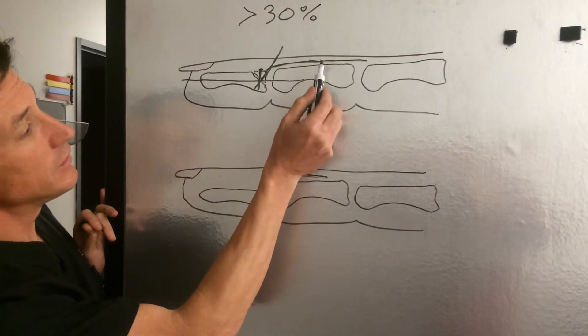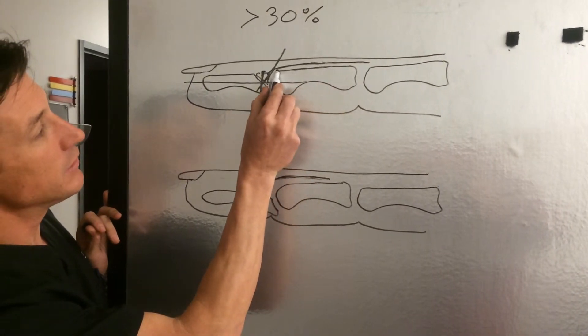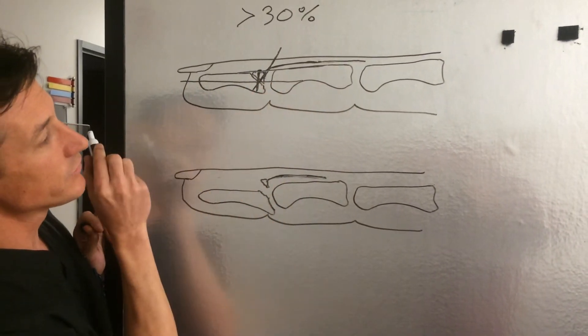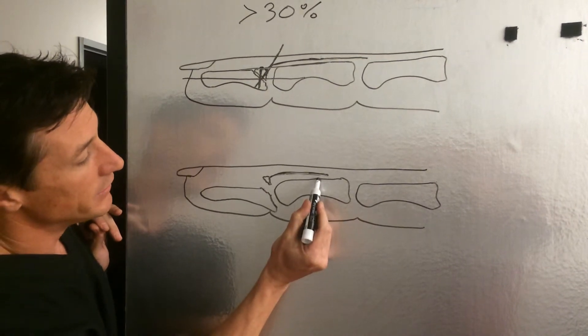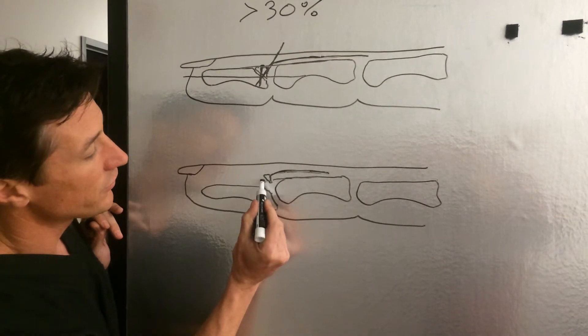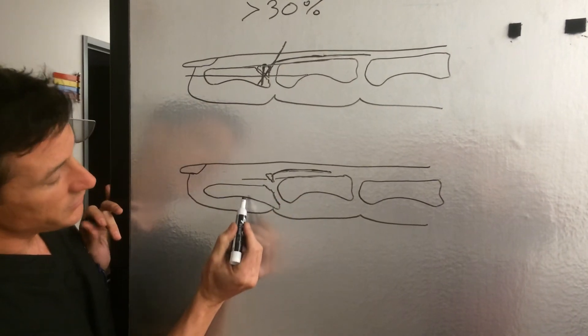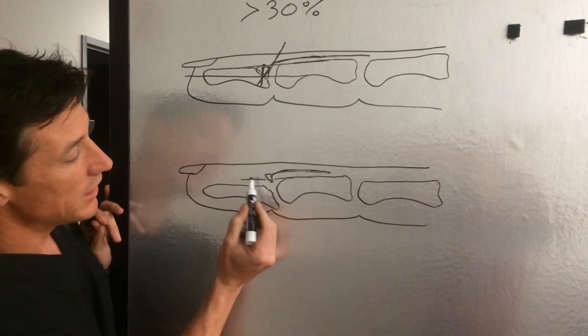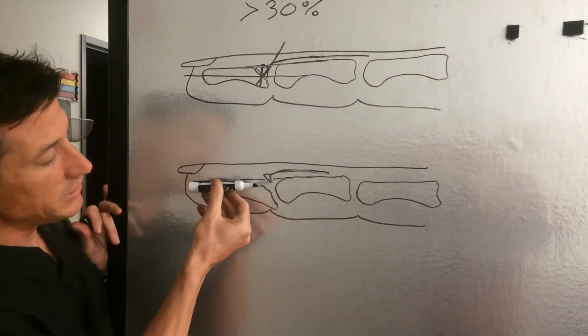When you draw a line on the dorsum of the middle phalanx here and you follow it all the way across, you can see that the distal phalanx is palmar to that line, which means the joint has now subluxated palmarly. You see the bony fragment here.